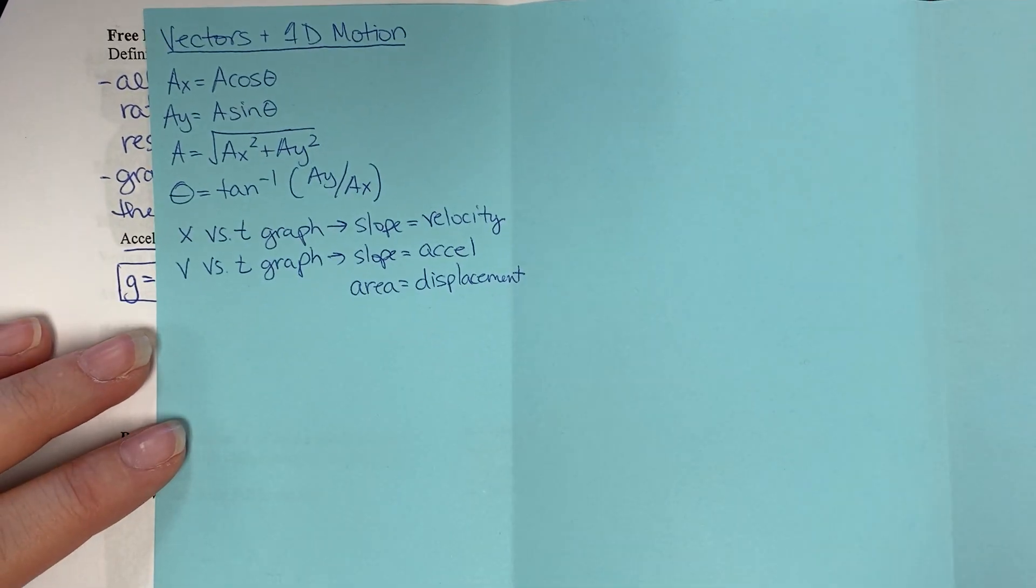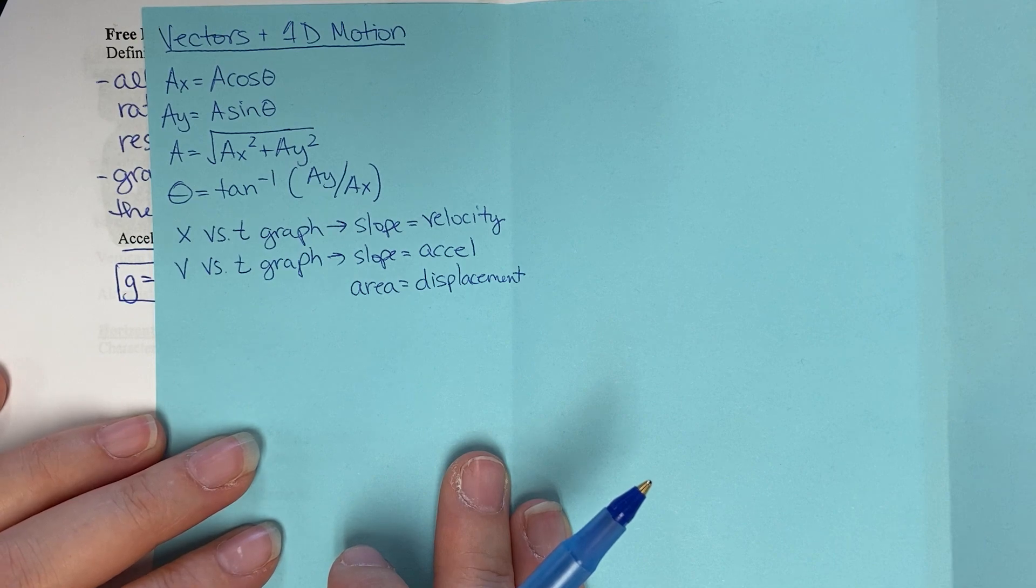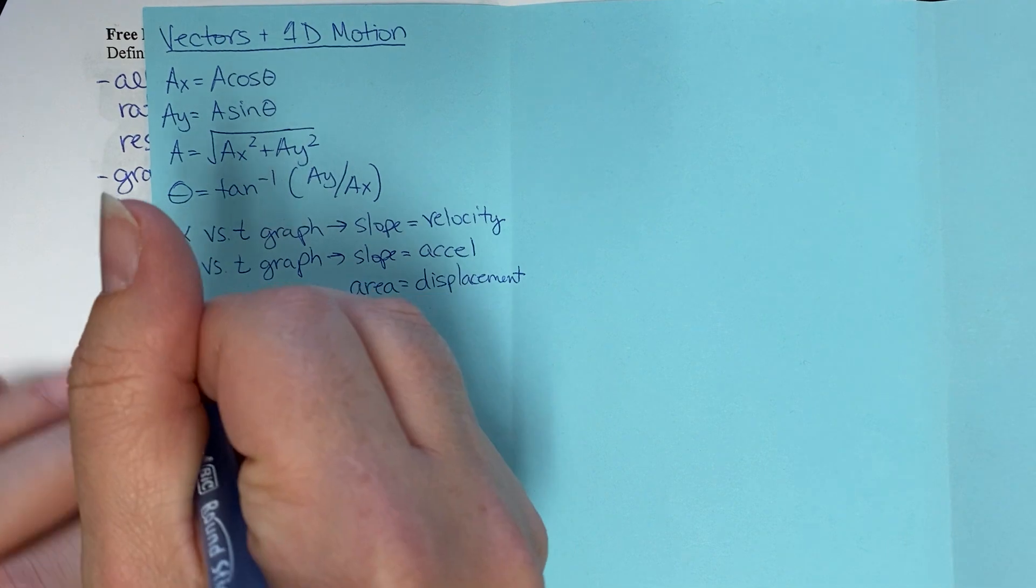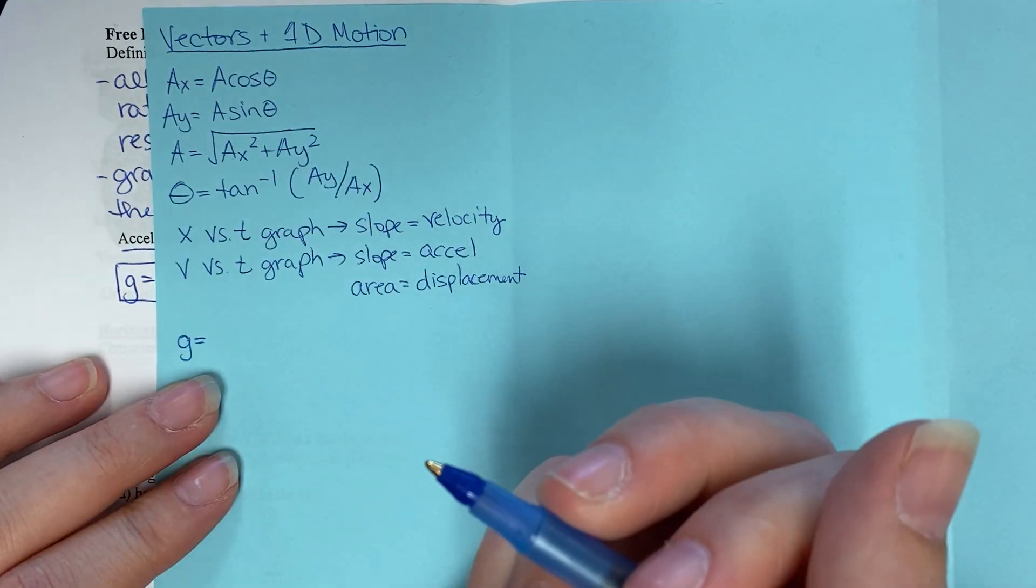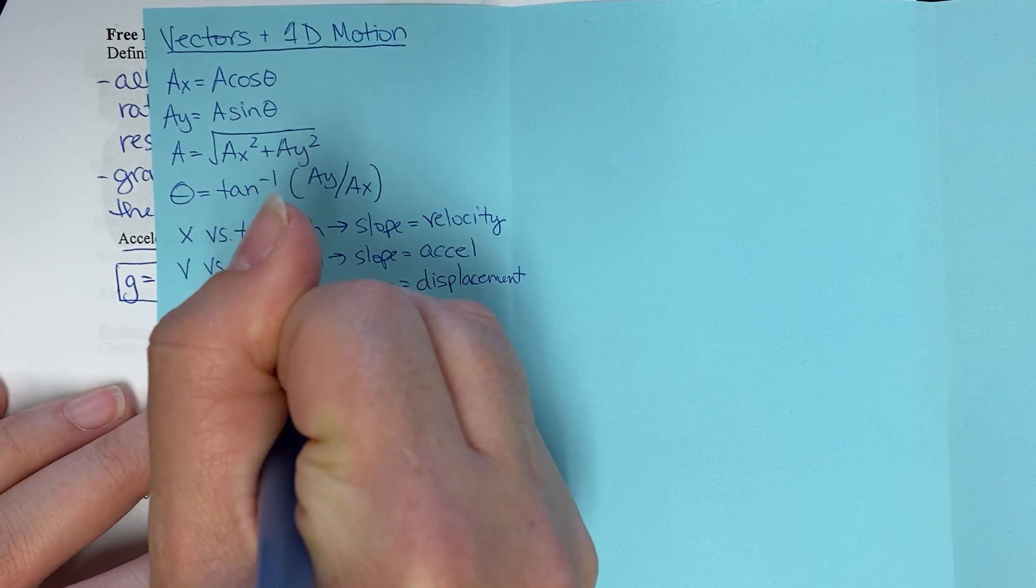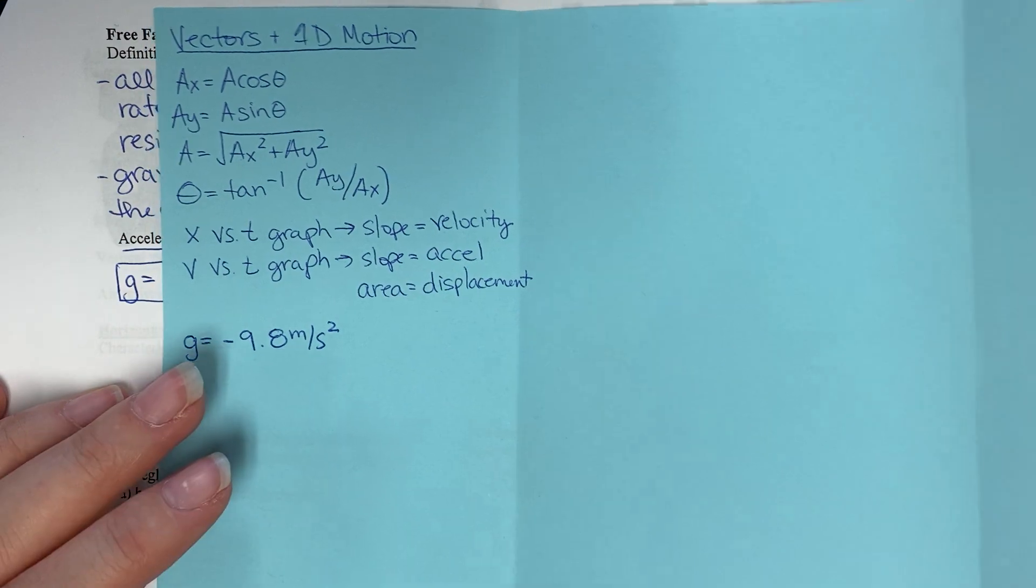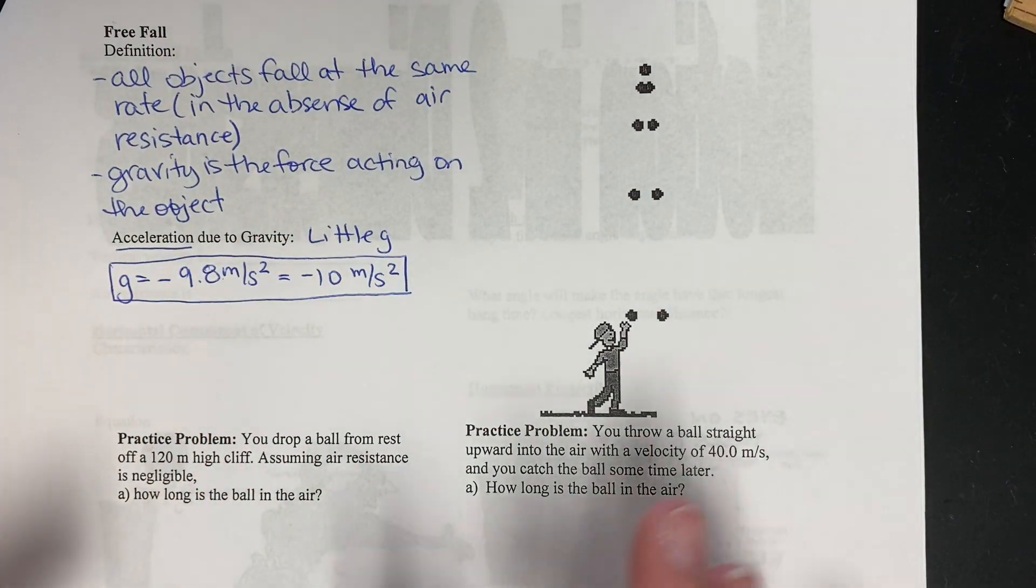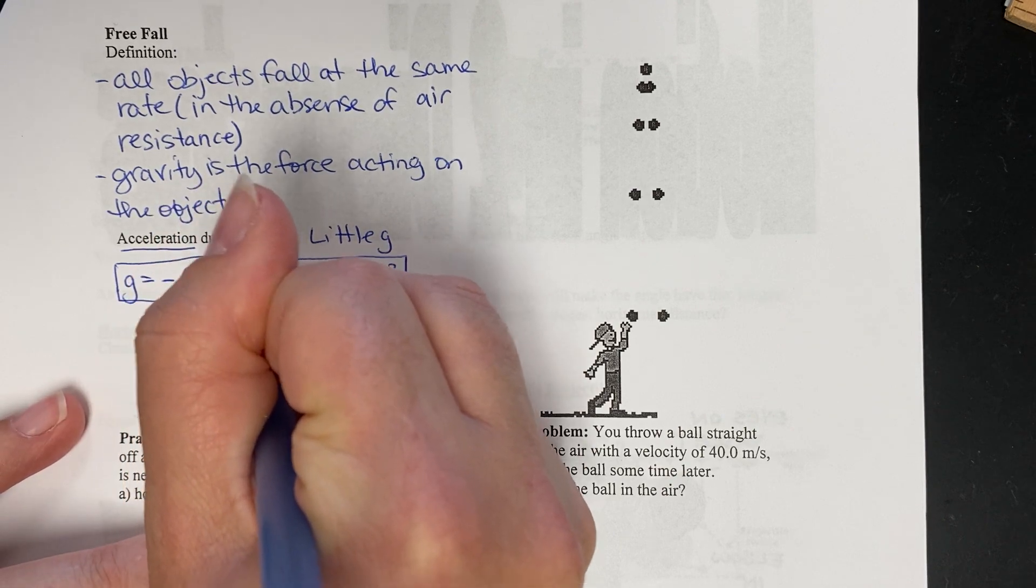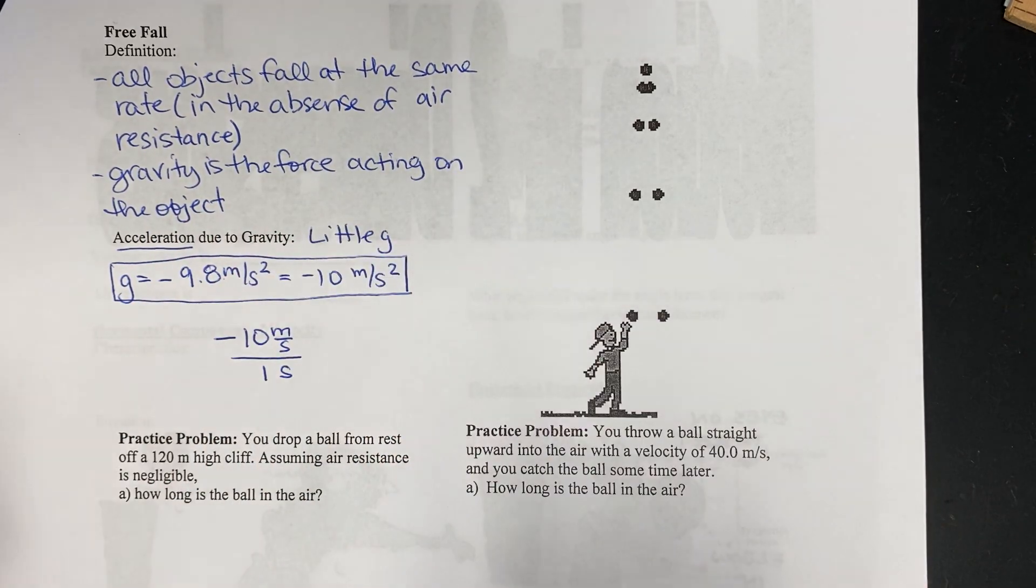Okay, so on your blue sheet, please feel free to stop the video at any point. If you don't have your blue sheet, go ahead and grab that. So on your blue sheet, you need to write that little g or the acceleration due to gravity is negative 9.8 meters per second squared. Now what does this actually mean? Well, this means that an object is losing 10 meters per second every one second.